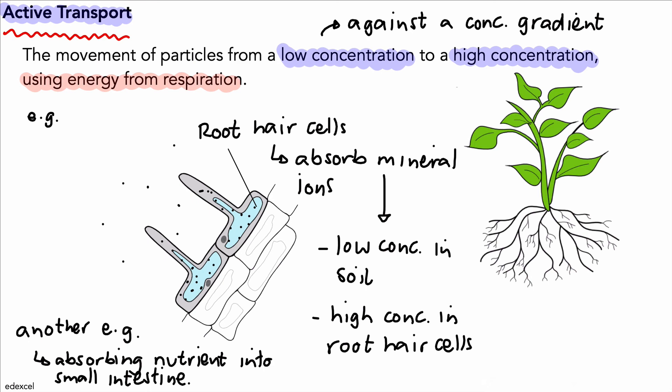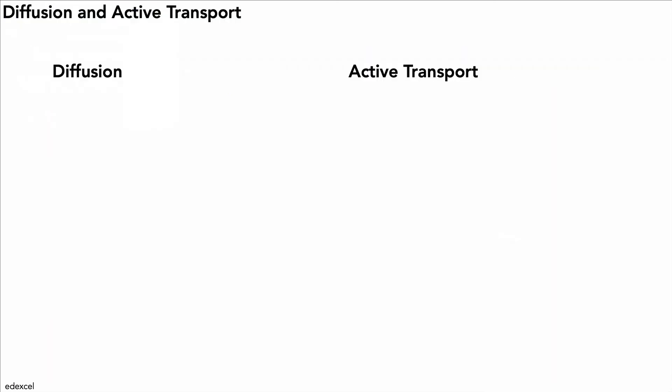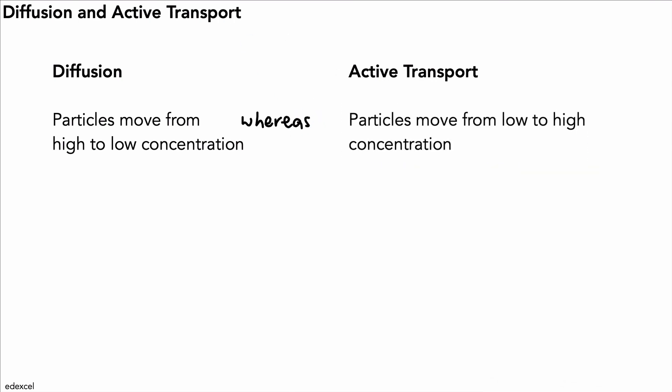Let's have a quick comparison. Diffusion versus active transport. With diffusion, particles move from high to low concentration, whereas in active transport, particles move from low to high concentration, or in other words, against the concentration gradient. The word 'whereas' helps us to compare the two.